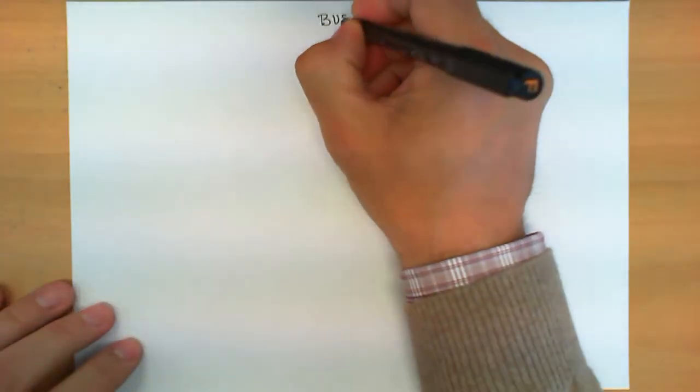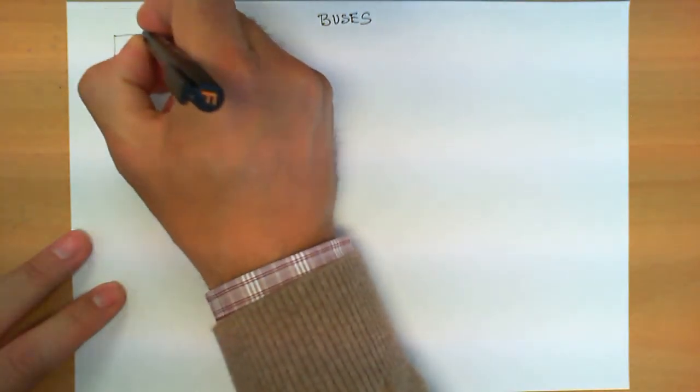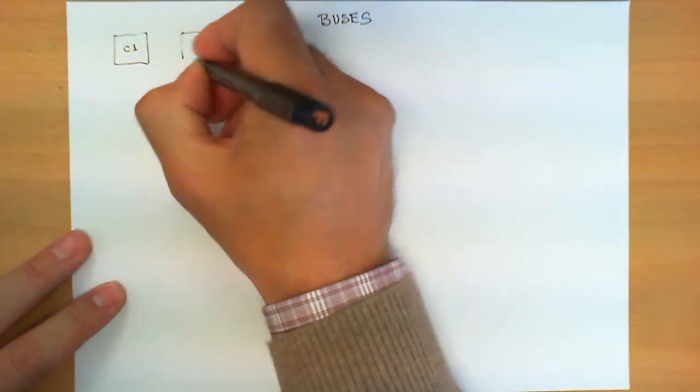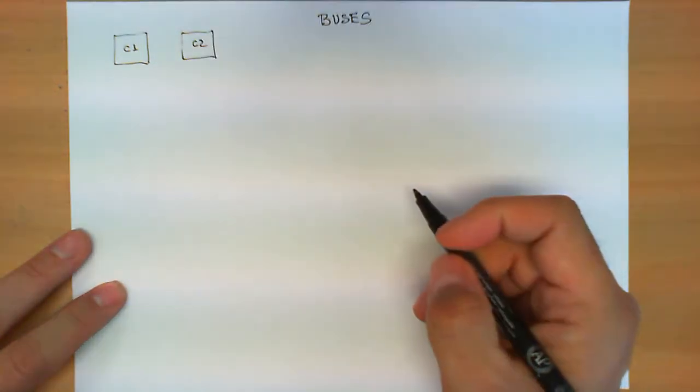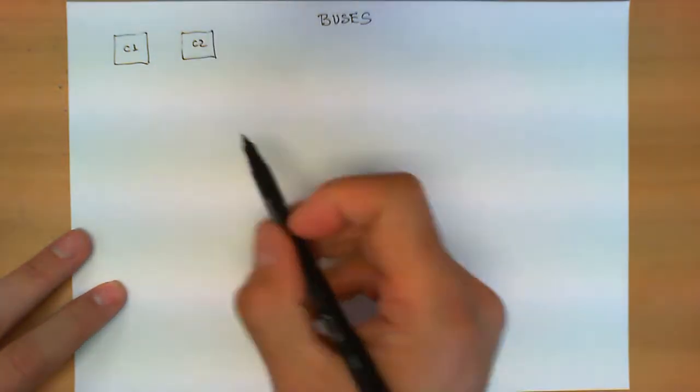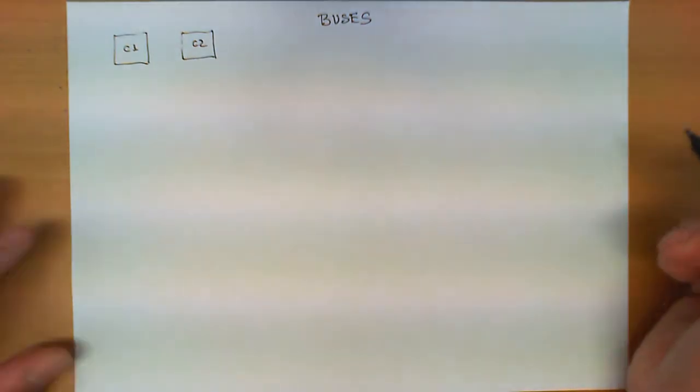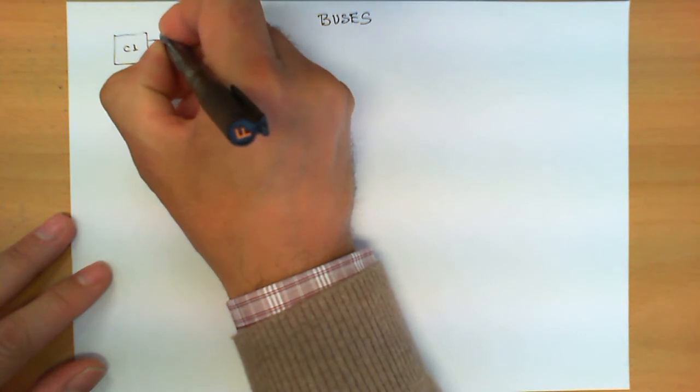Let's talk about buses. Suppose we start with two circuits, C1 and C2, and they would like to talk to each other and exchange signals. Let's assume that the signals they have to exchange are made out of a numerous number of bits, like for example 32.